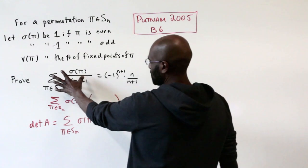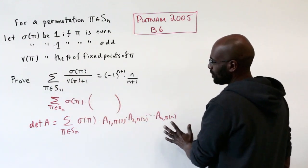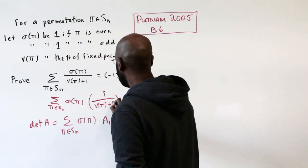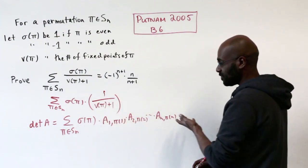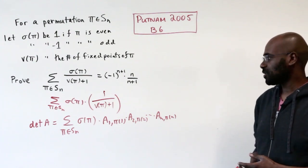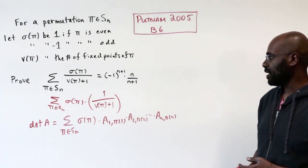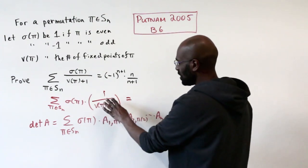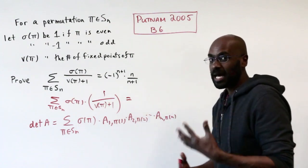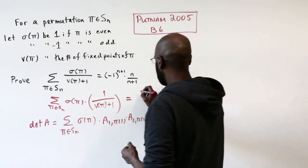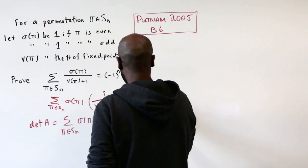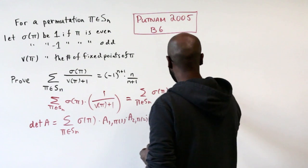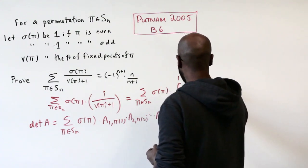It would be nice if we can represent this in terms of this sum. That would mean the quantity 1 over ν(π) plus 1 should look like a product. However, we can change this by recognizing that 1 over something plus 1 looks like an integral. In fact, this is the sum over π in Sn of σ(π) times the integral from 0 to 1 of x^ν(π) dx.